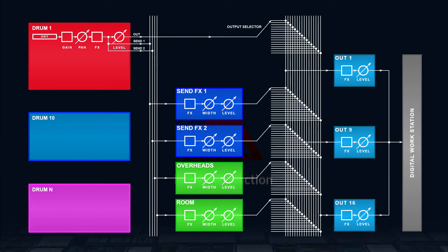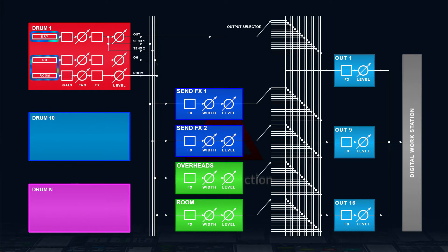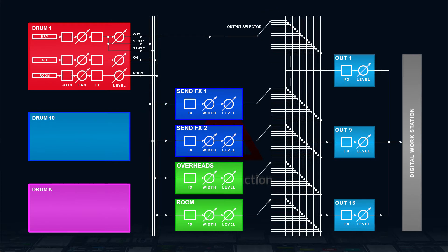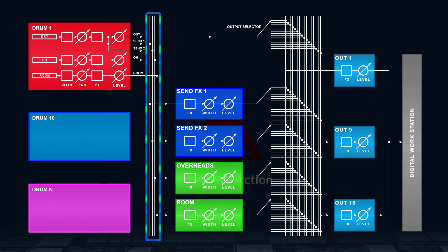Each drum produces a signal and potentially room and overhead signals. The output of the drum is processed using effects you can control in the mixer, and the result is sent to any output channel as well as any send channel. Overheads and rooms too have their FX pipelines in each drum, which is normally impossible when mixing live drums, and then all drums are mixed together. The mixed results are processed using another dedicated FX pipeline and then sent to any output channel.